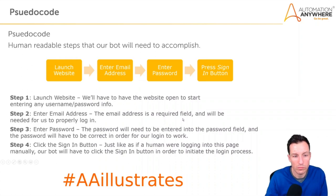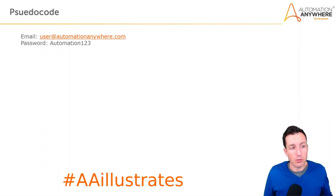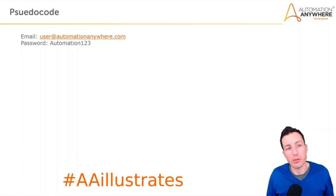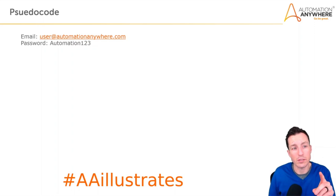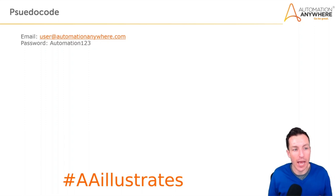The URL for the exercise page is in the description of this video. The username is user@automationanywhere.com — it is case sensitive. The password is capital A, Automation123. I'll repeat those as I'm filling them in for the bot to go through as well.